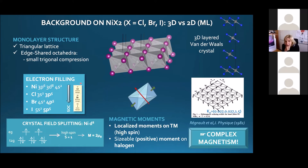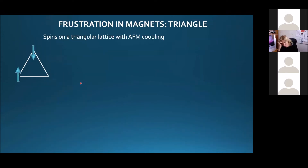The crystals of nickel iodide and nickel bromide were actually studied in the 1980s, and already at that time some complex magnetism was detected. Now we want to do a magnetic characterization of this material in monolayer form.